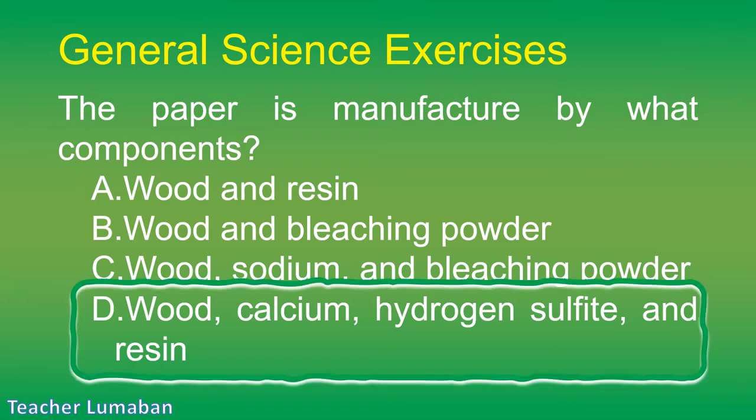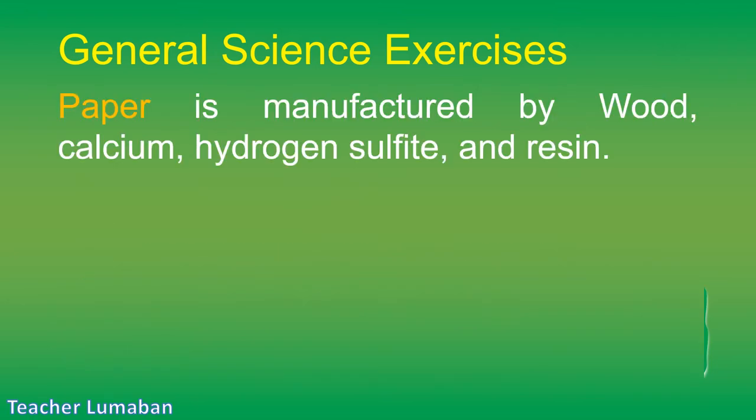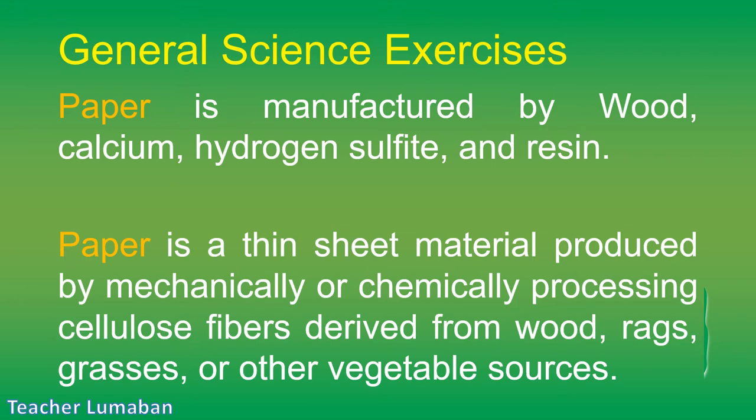The correct answer is Letter D: wood, calcium, hydrogen sulfide, and resin. Paper is manufactured from wood, calcium, hydrogen sulfide, and resin. Paper is a thin sheet material produced by mechanically or chemically processing cellulose fibers derived from wood, rags, grasses, or other vegetable sources.